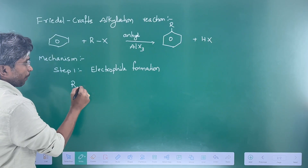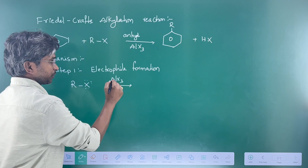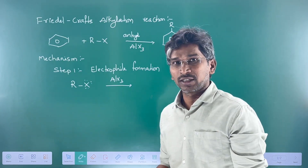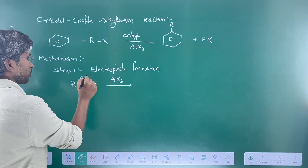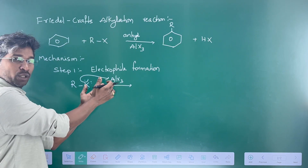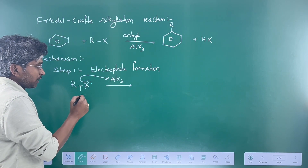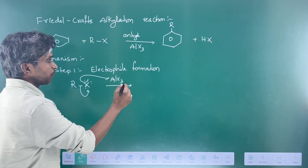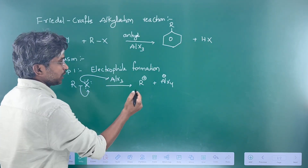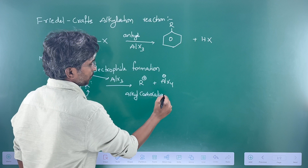In electrophile formation, we take alkyl halide and add anhydrous Lewis acid, which is AlX₃. Lewis acid is an electron pair acceptor. Aluminium is connected to three halogens — six electrons are there, so it is two-electron deficient. It takes an electron pair from the halogen. Whenever halogen donates an electron pair to aluminium, aluminium gets a negative charge and halogen gets a positive charge. It then takes the electron pair from the alkyl group, so that alkyl group gets a positive charge: R⁺ AlX₄⁻. This is called an alkyl carbocation, also called an alkyl carbonium ion.